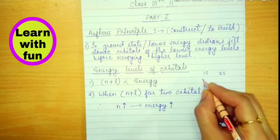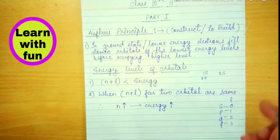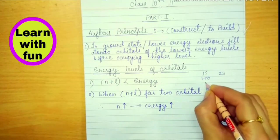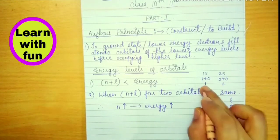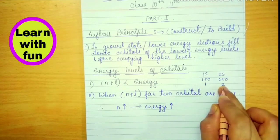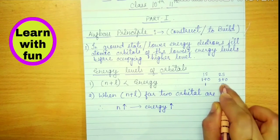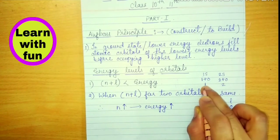Let's put this value here. 1 plus S value is 0, so it will be 1. 2 plus S value again 0, equals 2. This shows us which N plus L value is higher. This one has higher value, meaning higher energy.